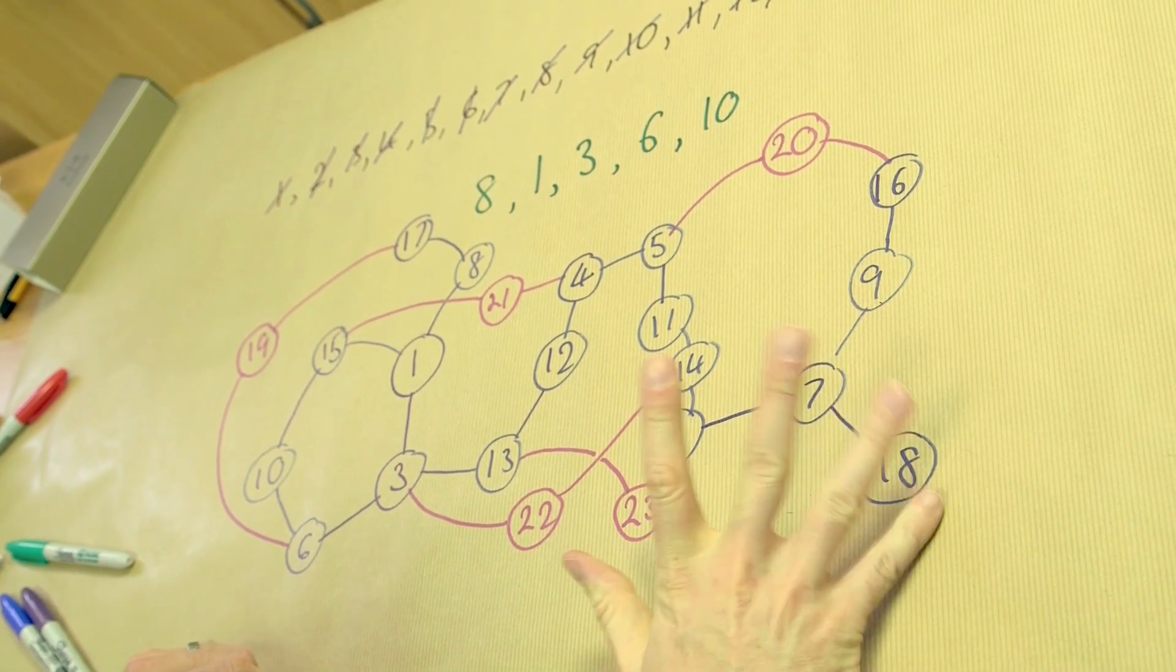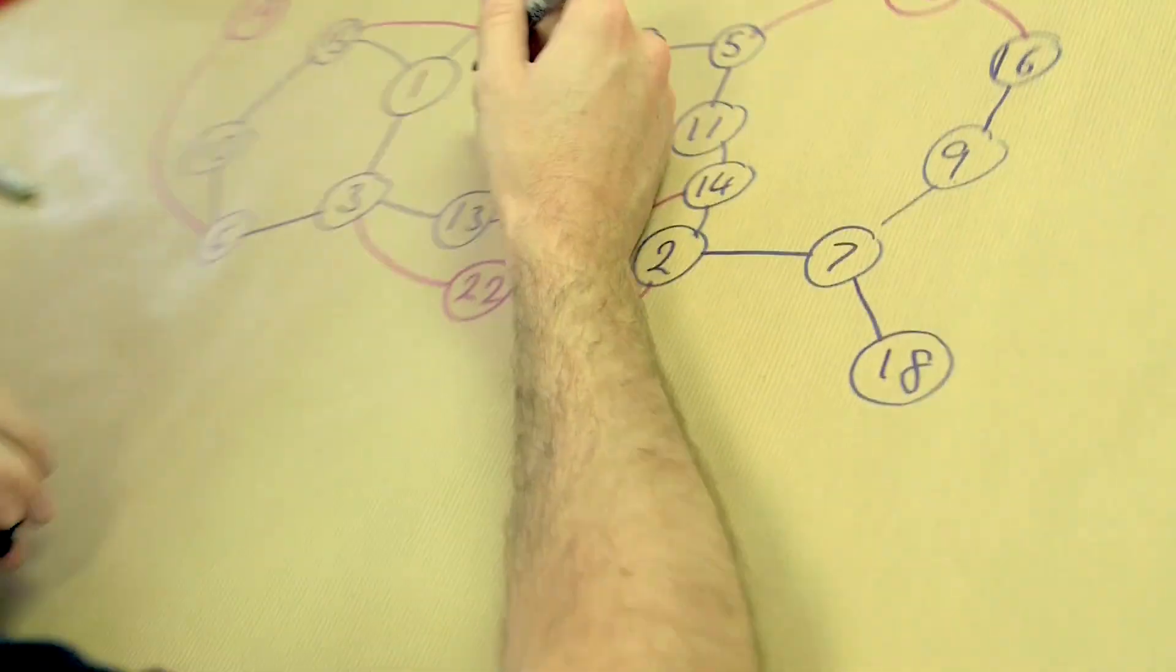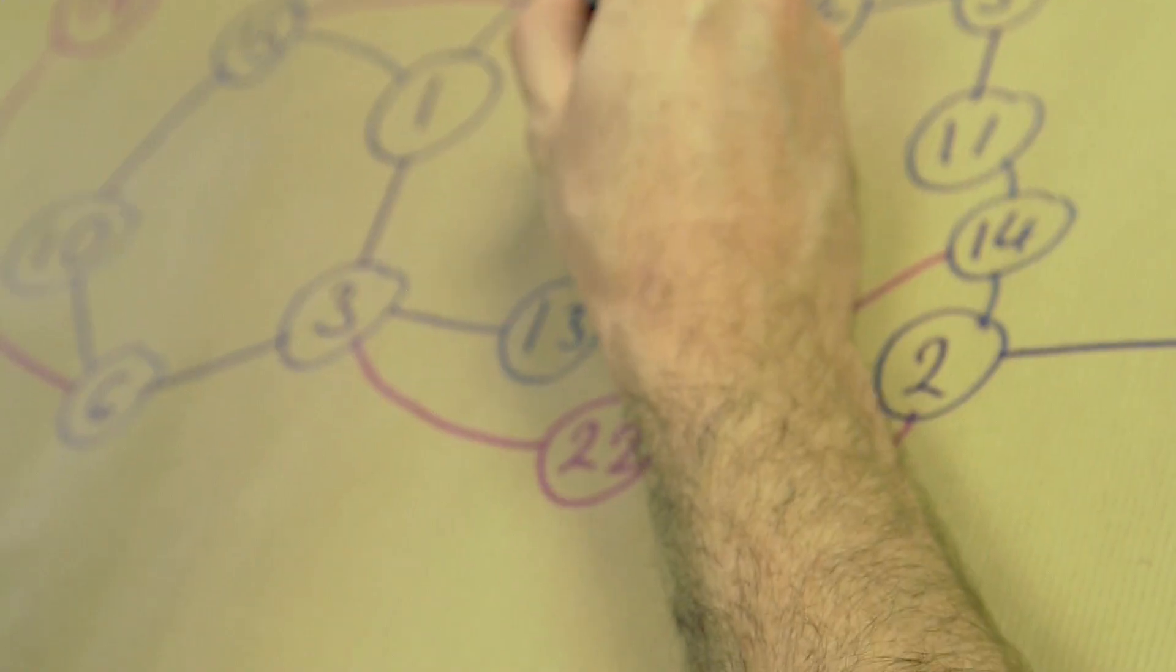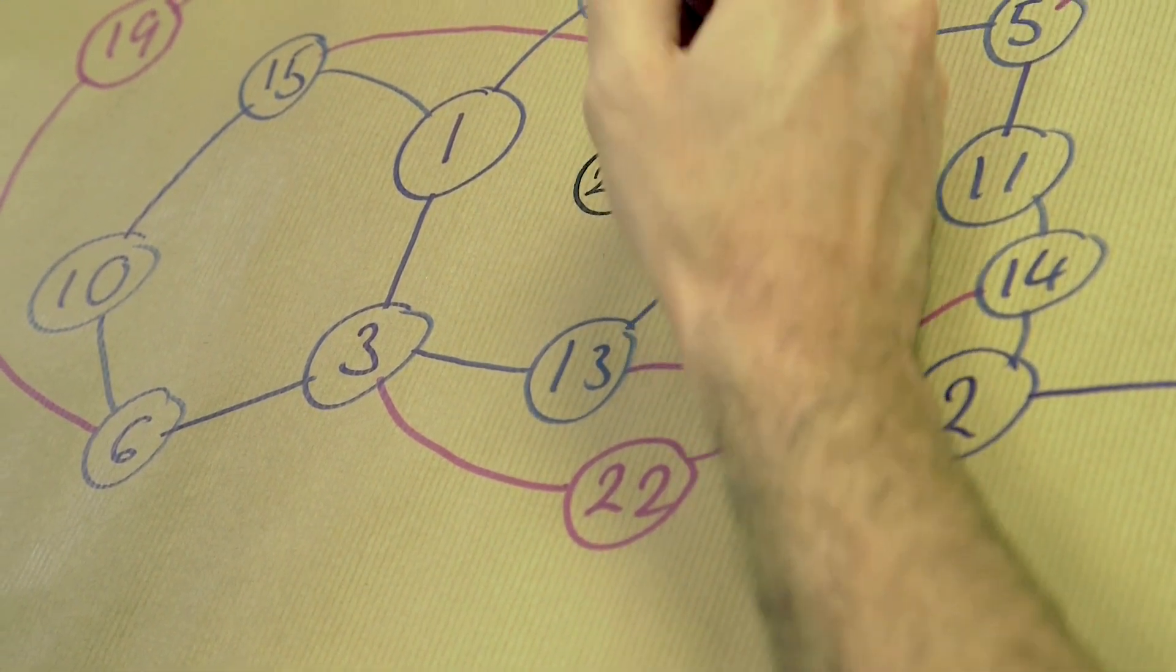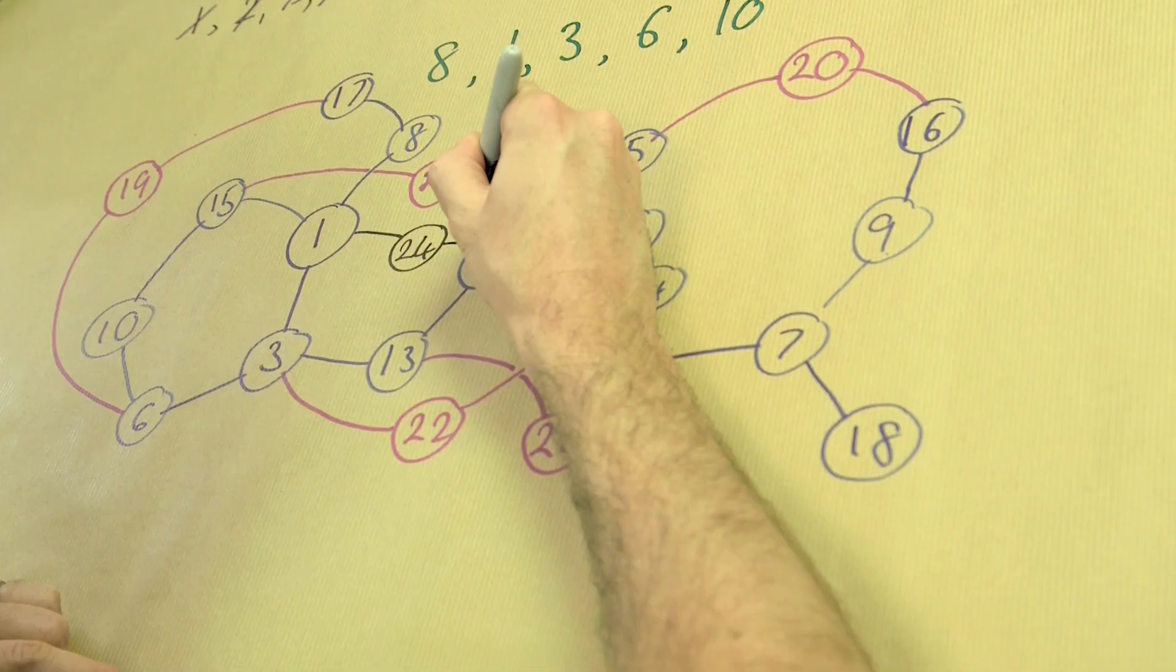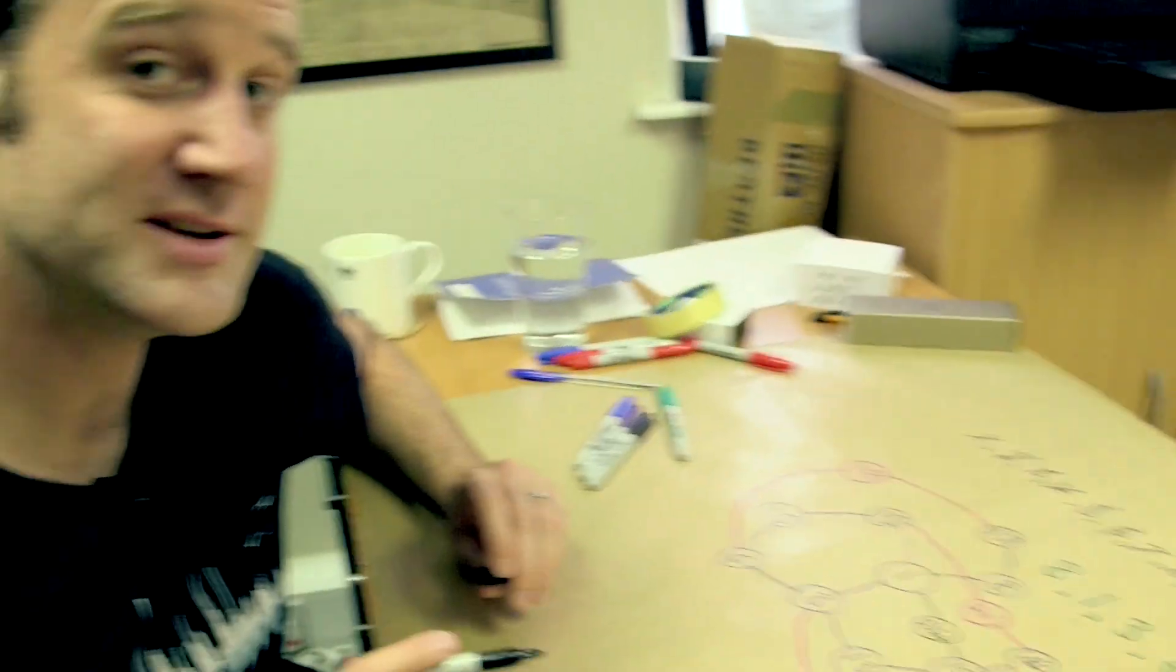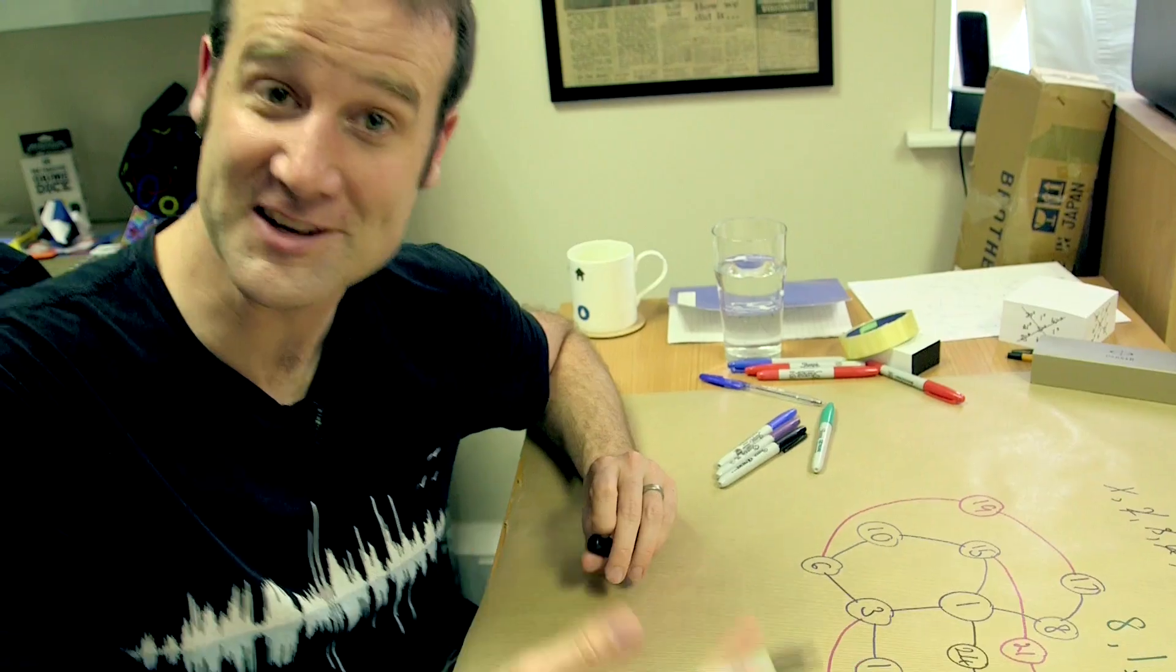But very sadly, when we add node twenty-four, it breaks again. So, twenty-four joins one to twelve. Twenty-four goes there, and then one links to twelve. And now, it's broken again. But when you add twenty-five, it's fixed again.